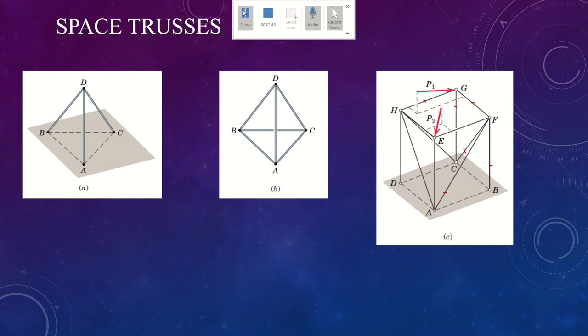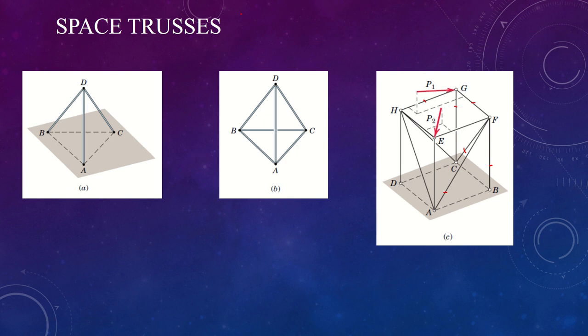The fixed point E is similarly created. Now the structure is entirely rigid. The two applied loads will result in forces in all of the members. A space truss formed in this way is called a simple space truss.